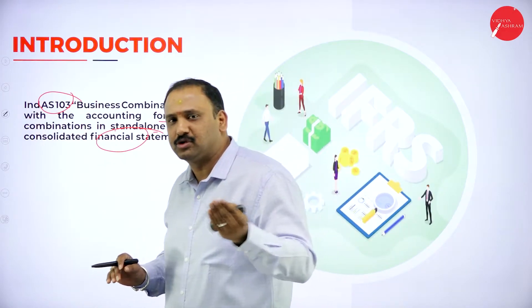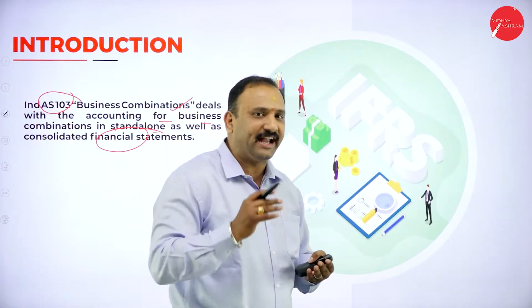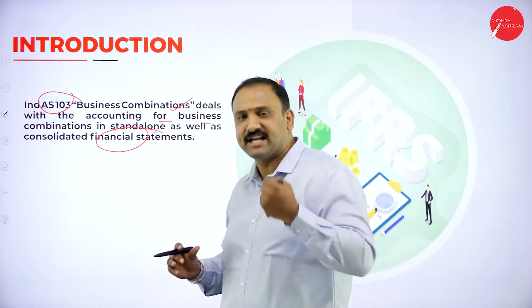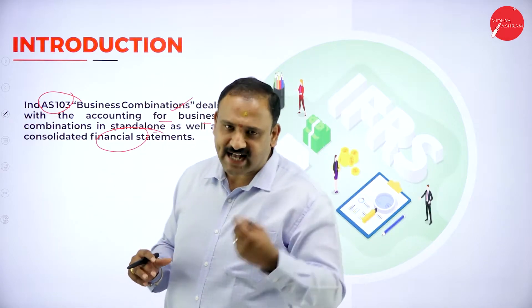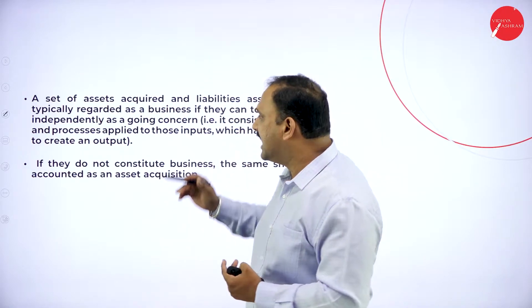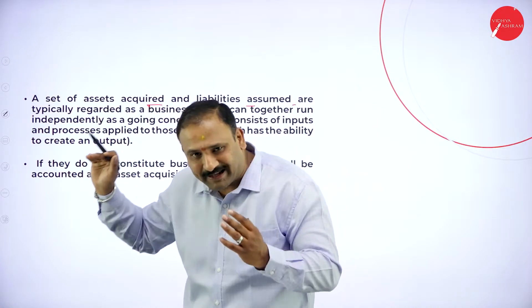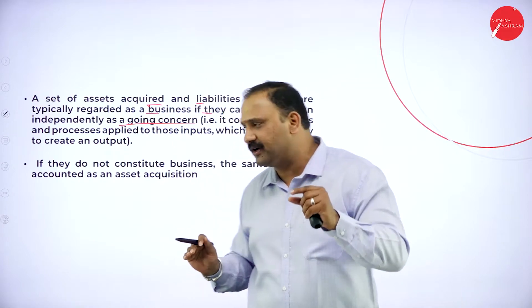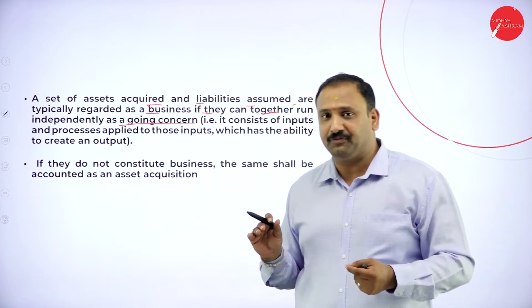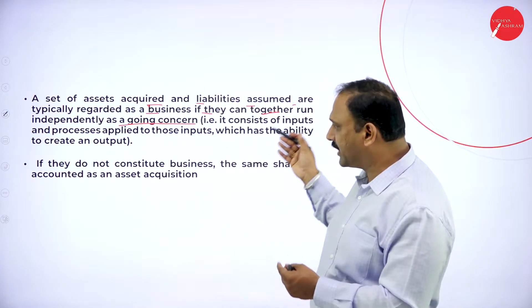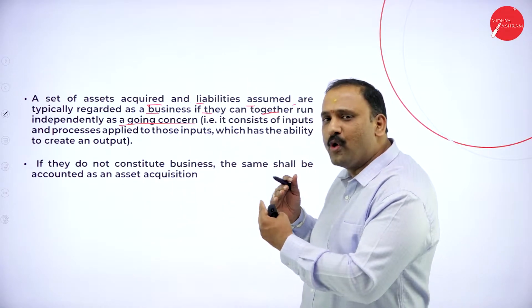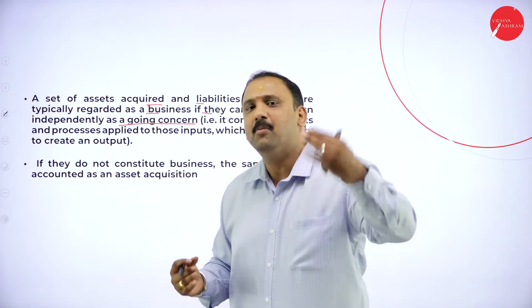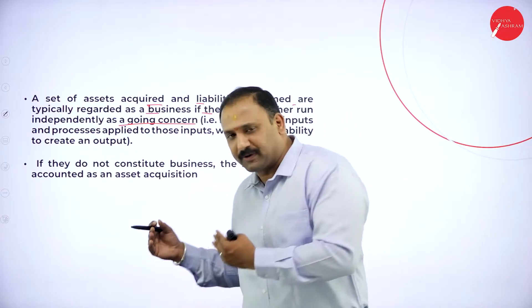This is a standard that talks about what business combinations a particular entity can have and how this is going to be discussed in the financial statements. A set of assets acquired and liabilities assumed are typically regarded as a business if they can get together and run independently as a going concern.